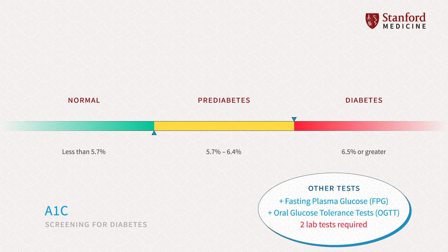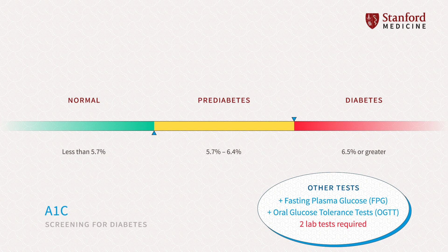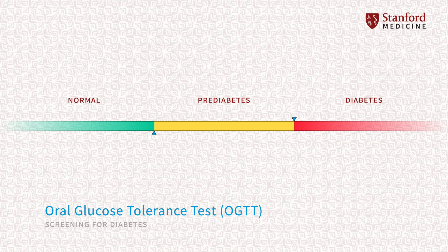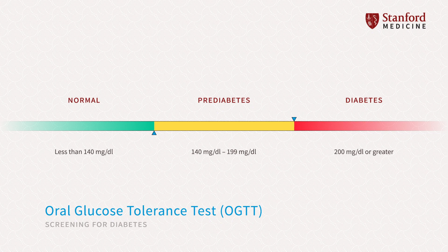Other screening tests include Fasting Plasma Glucose (FPG) and Oral Glucose Tolerance Test (OGTT). You need two lab tests to confirm type 2 diabetes. A FPG result less than 100 mg/dL is normal; 100 to 125 is pre-diabetes; and greater than 126 meets the criteria for diabetes. An OGTT result less than 140 mg/dL is normal; 140 to 199 is pre-diabetes; and 200 or above meets the criteria for diabetes.